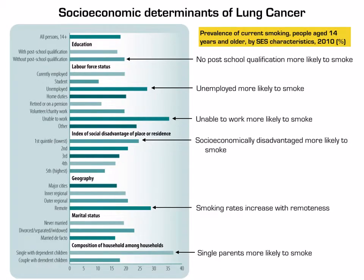Looking at the graph, you can see the prevalence of smoking comparing those with a high level of education against those with lower levels. Those with no post-school qualification are more likely to smoke. The unemployed and those unable to work are more likely to smoke, and employment plays a role. The socioeconomically disadvantaged show higher smoking rates, and smoking rates increase with remoteness. Single parents are also more likely to smoke. Overall, those who experience disadvantage and lower SES status are more likely to smoke, which links to statistics showing higher lung cancer rates in these groups.